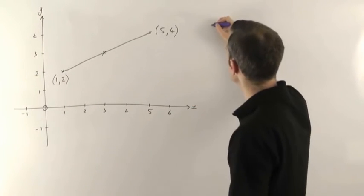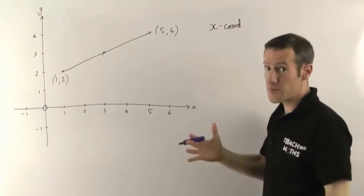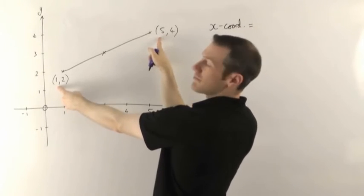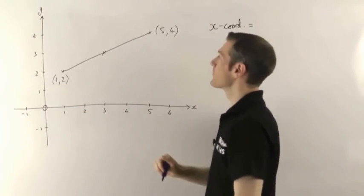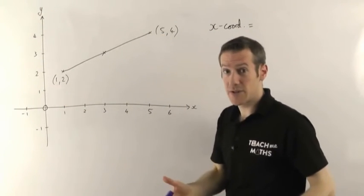So the x coordinate, if we do this first, of our midpoint is going to be the average of the x coordinates of the points on either end of the line. So remember when you're finding averages, if you've got two points here we add them together and divide by 2.